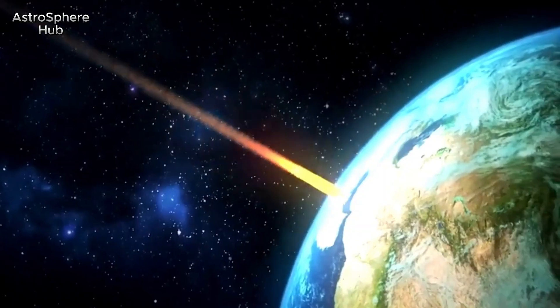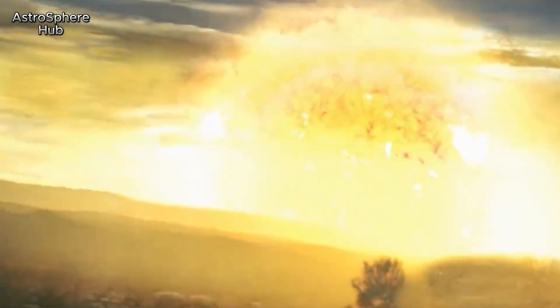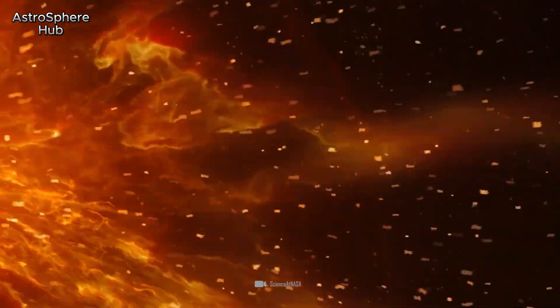One thing is for sure, the storms in May 2024 reached geomagnetic levels G4 and G5 on the five-level scale, which means they were severe to extreme geomagnetic storms.